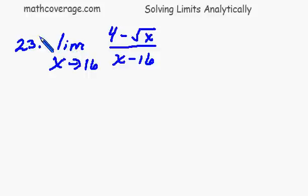We have number 23 here, the limit as x approaches 16 of 4 minus the square root of x over x minus 16. Now if I plug 16 in the bottom, we're dealing with 0 in the denominator and that's not good. So what we need to do is manipulate this thing in such a manner that we can avoid that and end up rewriting this limit.